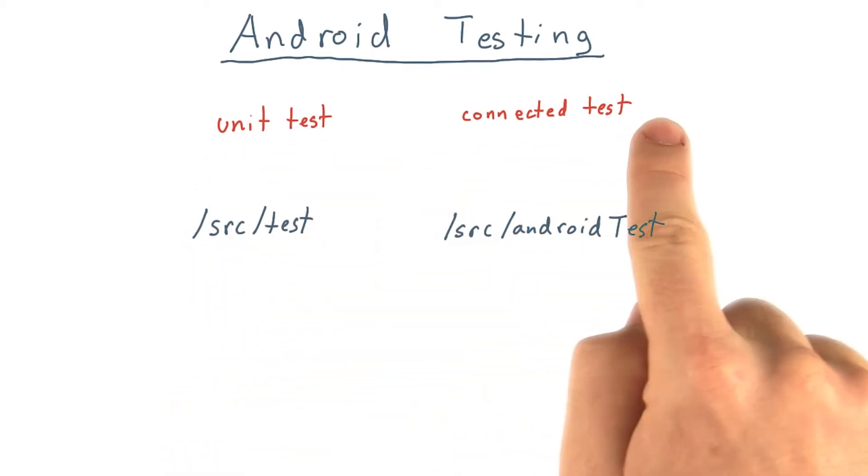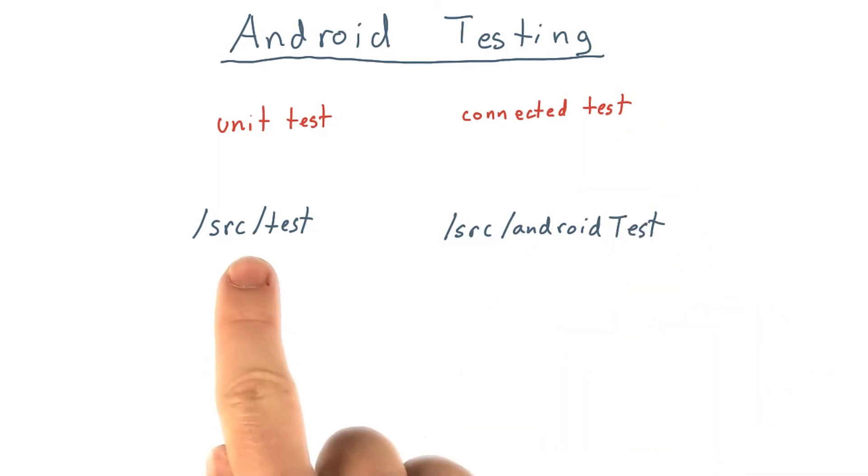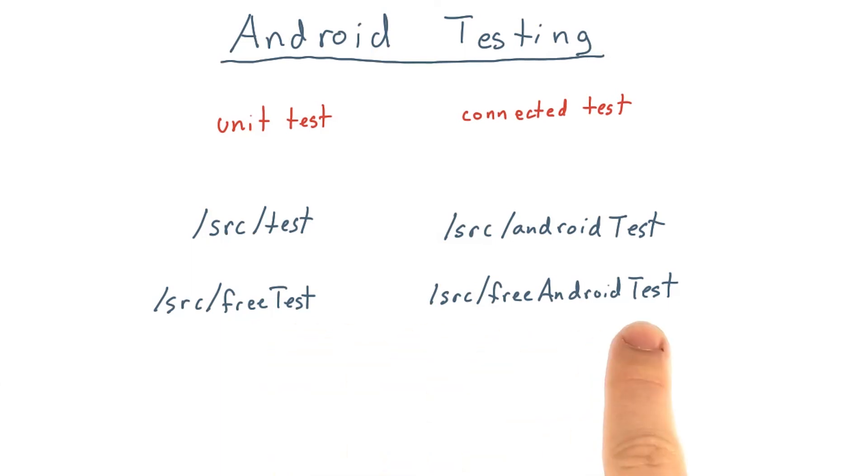Both unit tests and connected tests have their own source sets named test and Android test respectively. The notion of variants extends to tests as well, allowing the right test specific to a particular build type or product flavor. The naming conventions for these source sets follow the same pattern as for application code, except for the test or Android test suffix.